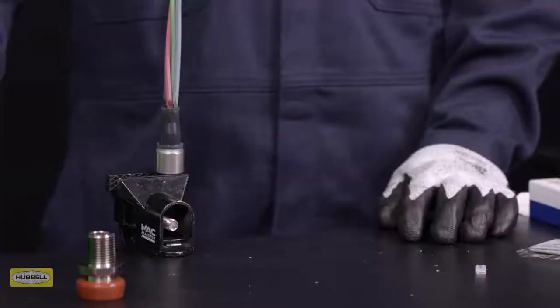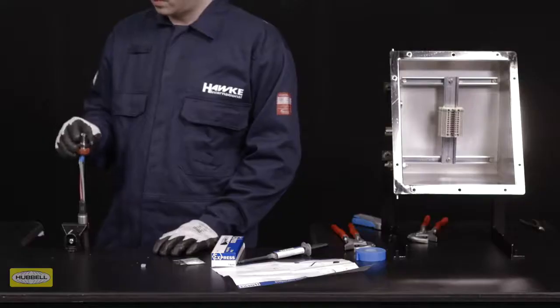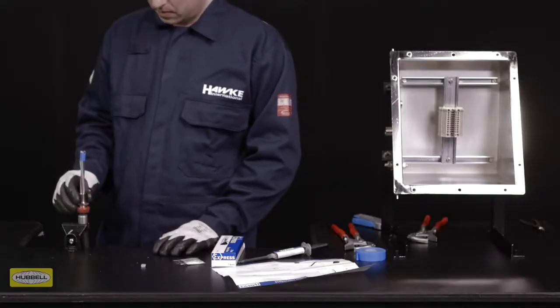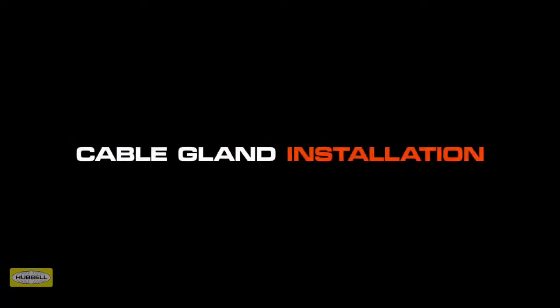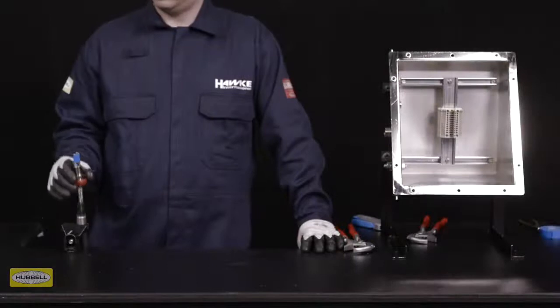Place the entry over the silicone pot to ensure it is held in the correct position. Gland installation can now continue. Now that the potting is complete, use a wrench to fit the entry into the enclosure.